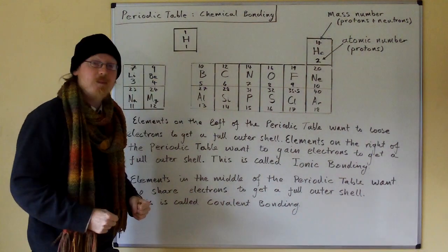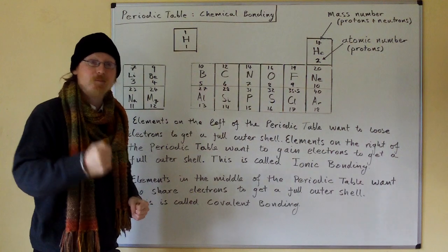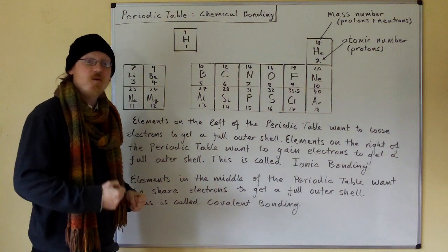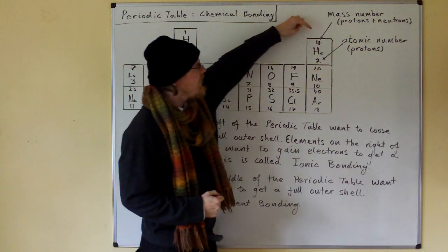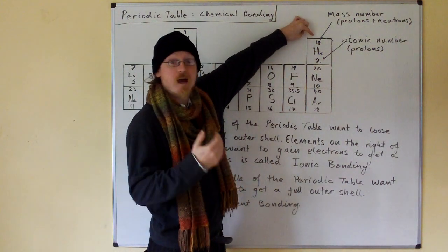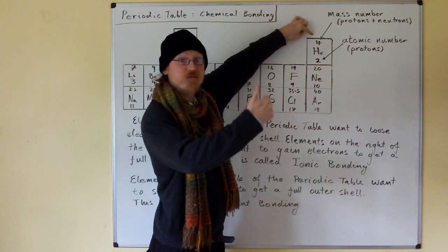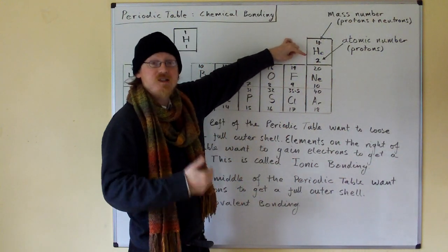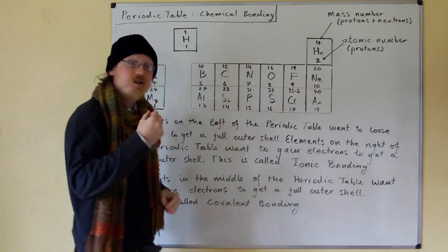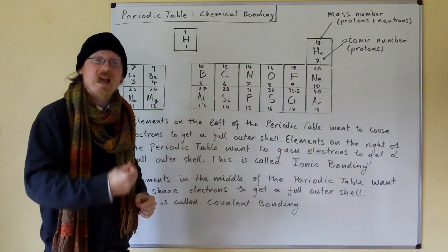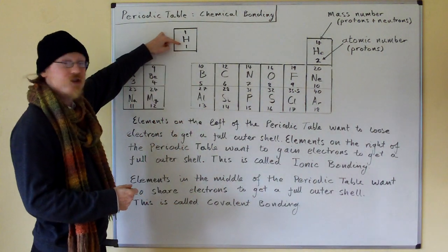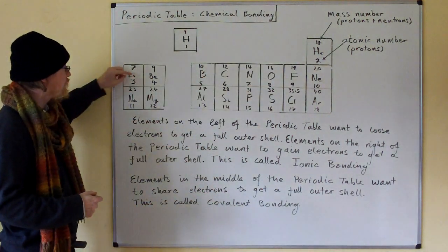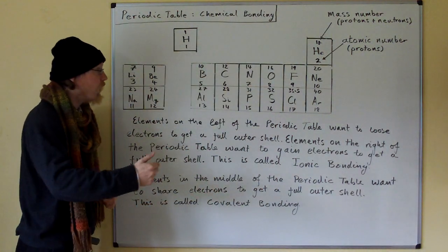The periodic table and chemical bonding. Here I've shown the first 18 elements of the periodic table. I've shown the mass numbers, which is the number of protons added to the number of neutrons in the nucleus, and I've shown the atomic number, which is the number of protons. It's the atomic number which makes the element what it is. So hydrogen has an atomic number of 1, helium 2, lithium 3, beryllium 4, and so on.